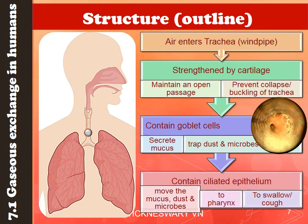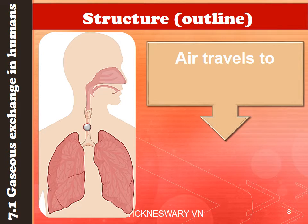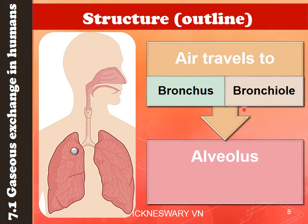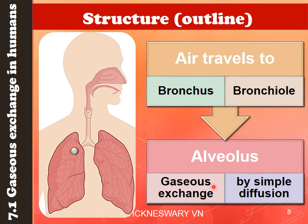From the trachea, air then travels into the bronchus — the two branches here — and inside the lungs the bronchus divides further into bronchioles. Finally, air will arrive at the alveolus, which is where gaseous exchange happens by simple diffusion. Next, we are going to look at the microscopic structure of the alveolus.